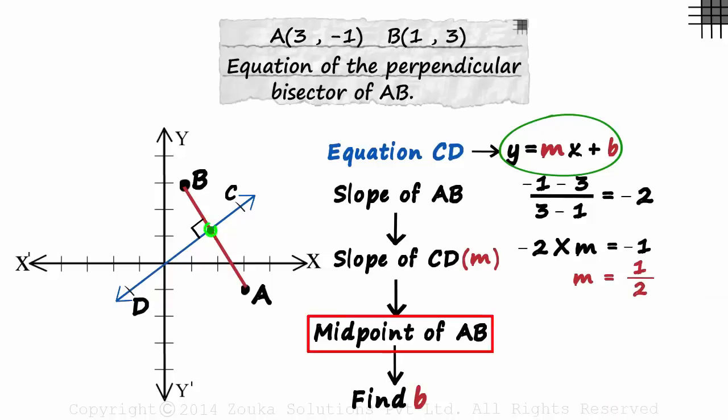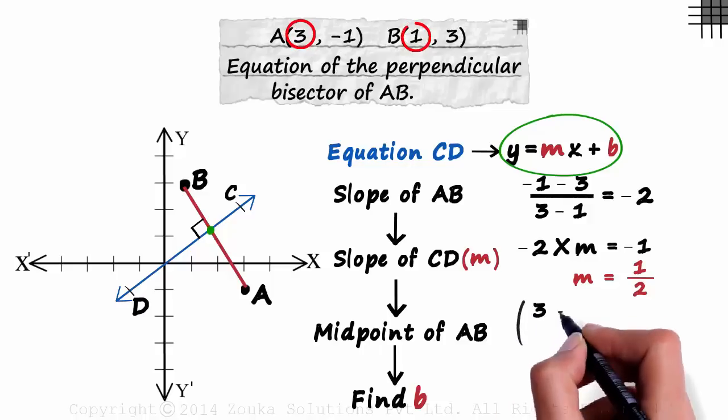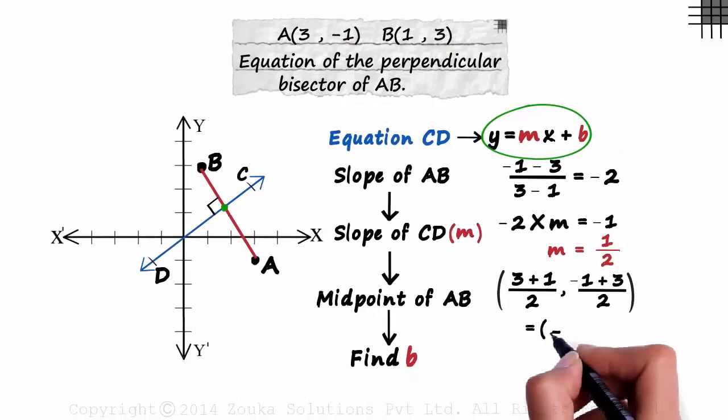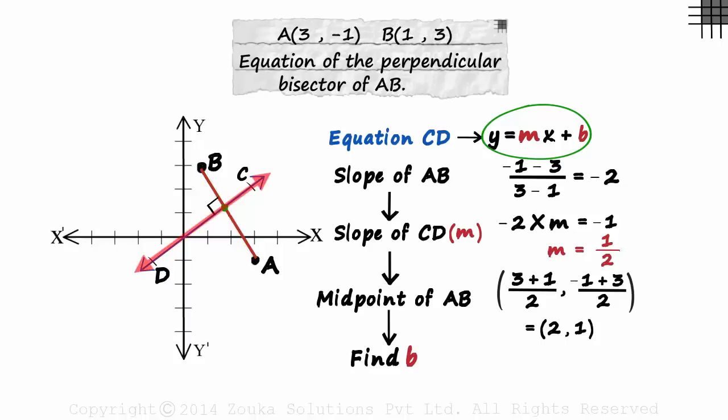Now we get to the midpoint of AB. The X coordinate of the midpoint is the average of the X coordinates of the endpoints. The X coordinate will be 3 plus 1 over 2. And the Y coordinate of the midpoint will be minus 1 plus 3 over 2. 2 comma 1 will be the midpoint of AB. And it is also one of the points on CD. So we can substitute these values in place of X and Y.